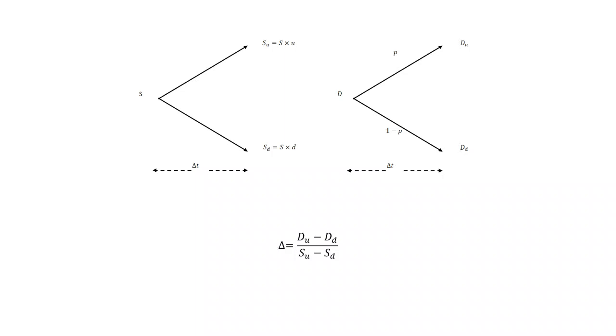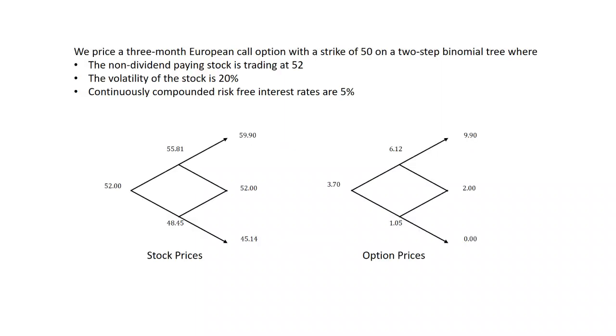Now I want to go back and look at a two-step binomial tree. I've already done all the work. We price a three-month European call option with a strike of 50 on a two-step binomial tree where the non-dividend-paying stock is trading at 52. The volatility of the stock is 20%, continuously compounded interest rates are 5%. We calculate U and D. U equals E to the volatility, E to the sigma delta T.